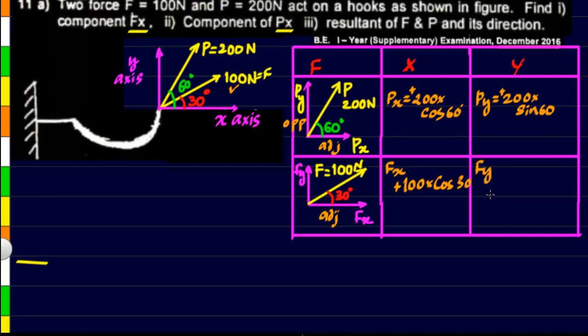Then we can find Fy by using the same formula. So Fy will be of course 100 into sin of 30. Now once again because it is in positive y direction this can be also taken as positive.